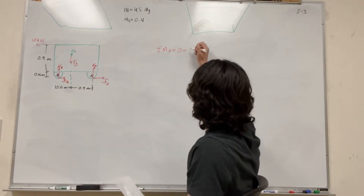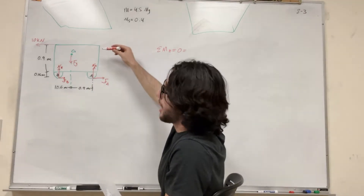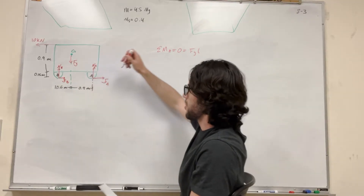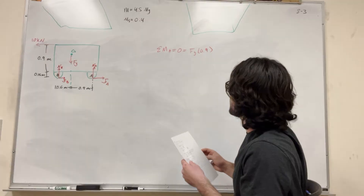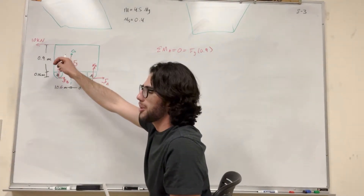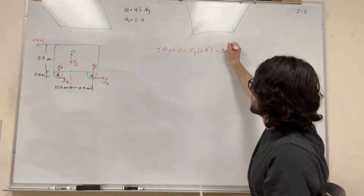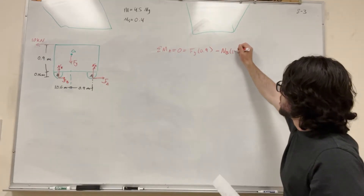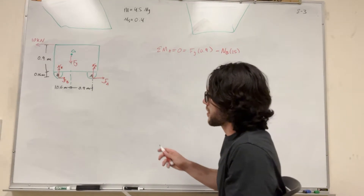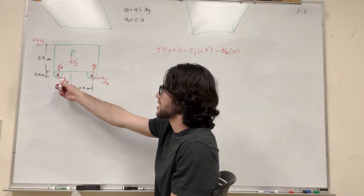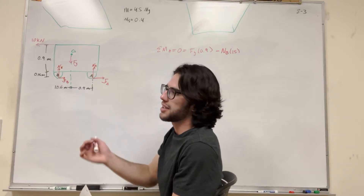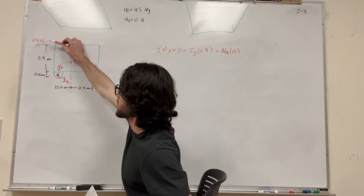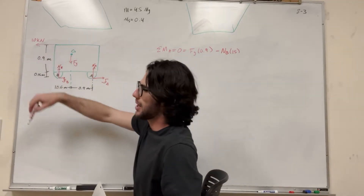Force of gravity is pushing down, so around A it's going to make us want to rotate counterclockwise — we add force of gravity times its x-direction distance, which is 0.9 meters. Normal at B is pushing upward, making us rotate clockwise, so we subtract Normal at B times its x-direction distance of 1.5 meters. The friction force at B acts only in the x direction and has no x displacement around A, so it produces no moment. The 10 kN force pulling to the left creates a counterclockwise rotation, so we add 10 kN.